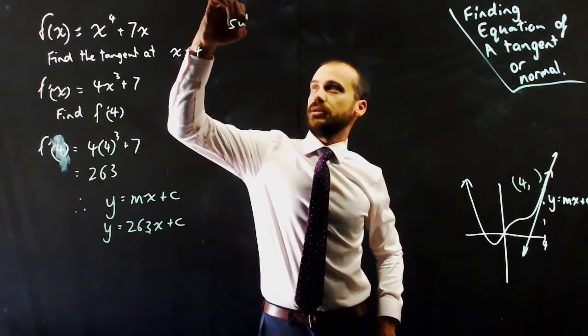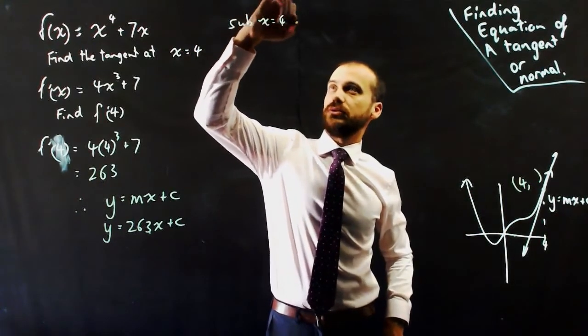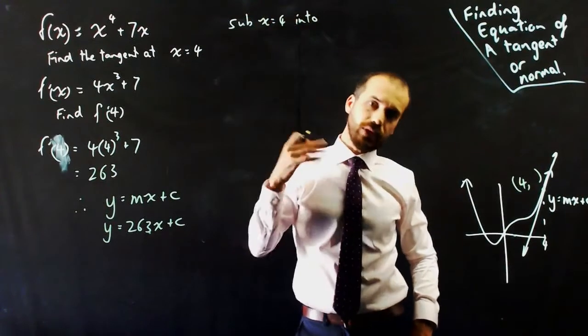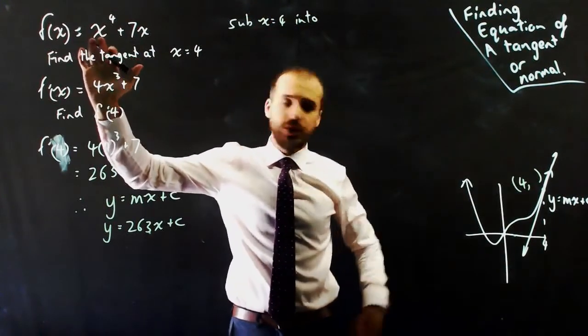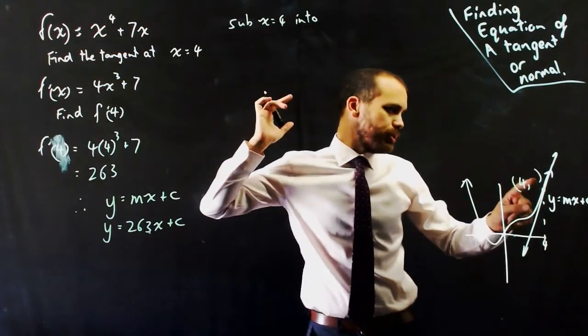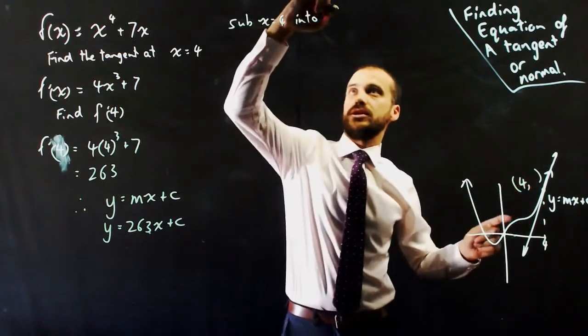So to find out what the something is, I can just sub x = 4 into... This is where you have to be careful. I'm subbing x = 4 into my original equation because I want to know what the original y value is. So into f(x).